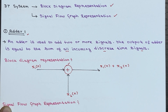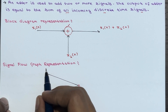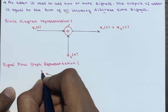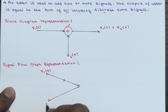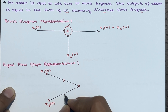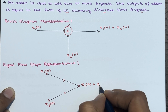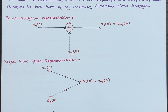This is the block diagram representation. Now for the equivalent signal flow graph representation: we have two nodes, x1 of n and x2 of n, joining at a single output node. The inputs are marked with arrows, and at the output node you get x1 of n plus x2 of n. You should be aware of both the block diagram and signal flow graph representation for the adder, as we will use these later.